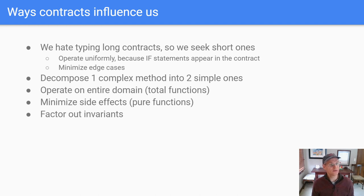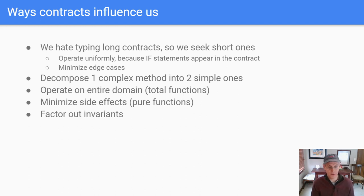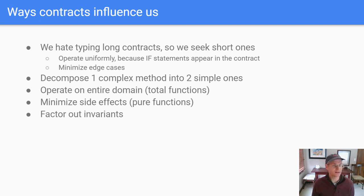One more way contracts influence us is that they encourage us to minimize side effects. Going back to ideas from functional programming, this is talking about pure functions — it's easier to reason about things that don't have side effects, where results only depend on the inputs and come only from the outputs. And finally, related to hating long contracts: if we find the same sort of thing being stated over and over again — for example, in the postcondition that my linked list does not have a loop at the end — I can factor that out. That's just factoring out a common statement: no matter what happens, my linked list will never have a loop.